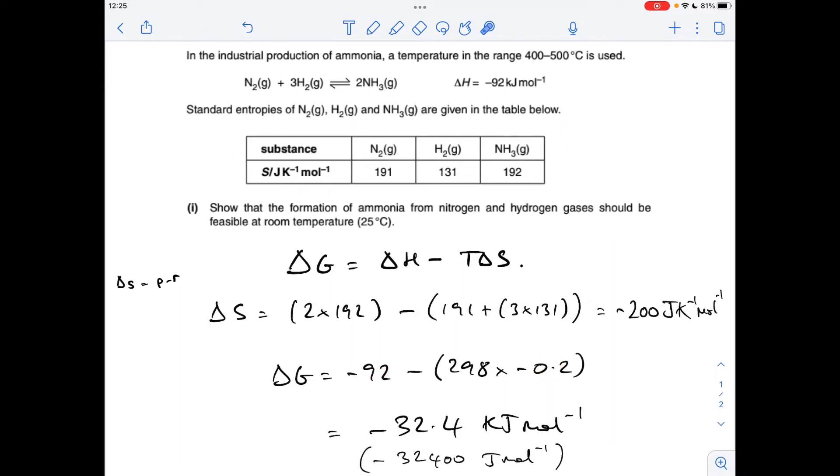So I'm getting minus 32.4 kilojoules per mole. You could have switched the enthalpy change up to joules per mole, and that would have given you an answer of minus 32,400 joules per mole. So the significant thing here is the fact that this is negative, and therefore the reaction's feasible at that temperature.